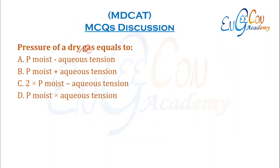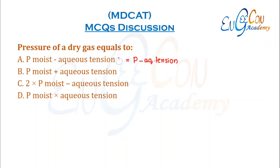Pressure of a dry gas equals: whenever we measure the pressure of a moist gas, we subtract the aqueous tension (pressure of water vapors) from it to get the pure vapor pressure of the gas. So A is the correct option.